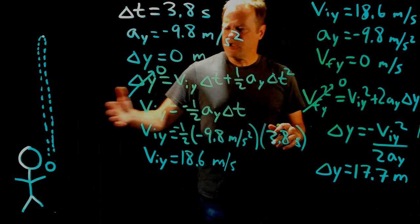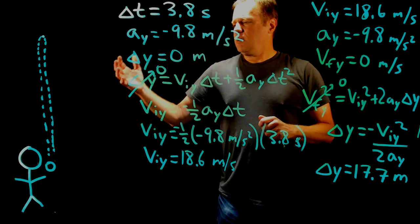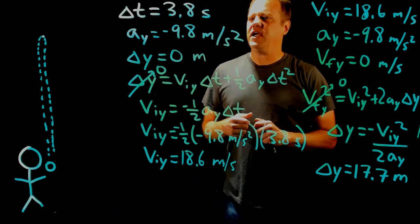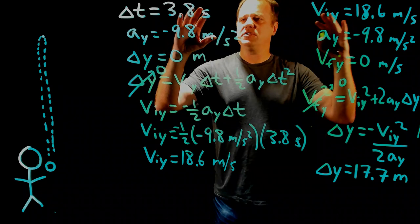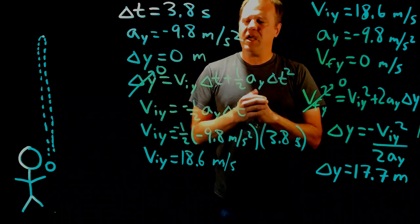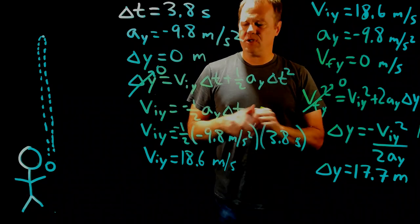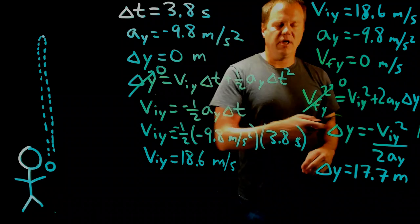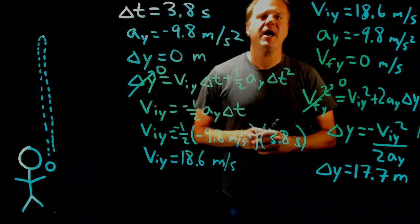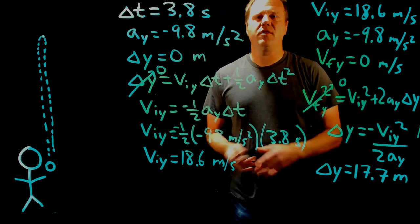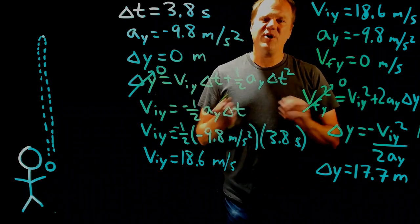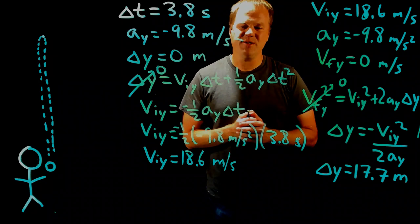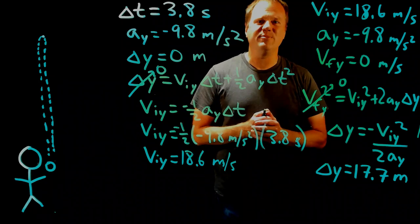To summarize: starting from just the one piece of information — 3.8 seconds — and gathering implicit information, I was able to determine the initial velocity plus the maximum height using the one-dimensional constant acceleration kinematics equations. Thank you.